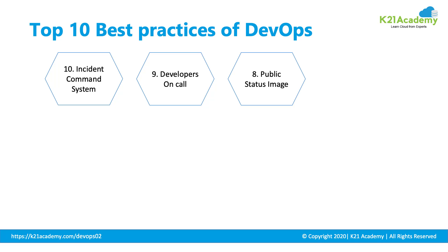The next one is Public Status Pages, where ChatOps comes into the picture. This involves integrating your DevOps tools with communication channels like messaging apps, WhatsApp, Slack, Teams, or email. You should always have this best practice in place because whatever is happening should be communicated to other people. From senior management to lower management, everyone should know what is happening around.